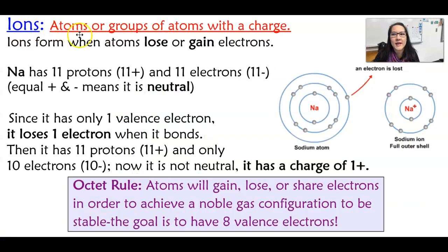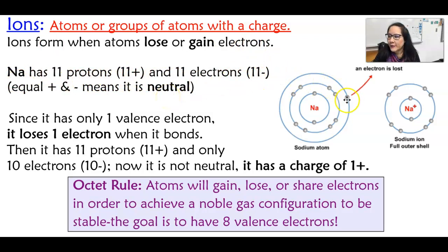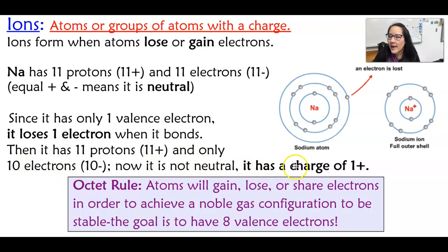Now let's talk about ions — they are atoms or groups of atoms with a charge. Ions form when an atom loses or gains electrons. For example, sodium has 11 protons and 11 electrons when it's neutral. If sodium were to lose one of its electrons, it's going to have 11 protons and only 10 electrons, which makes it not neutral with an overall charge of positive one. The octet rule states that atoms will gain, lose, or share electrons in order to achieve a noble gas configuration to be stable.